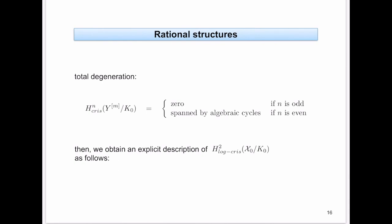Now, total degeneration. For the purposes of this talk, it is sufficient to assume that the odd crystalline cohomology of these Y^{[m]}'s is zero and the even crystalline cohomology groups are spanned by algebraic cycles. Think of projective space or rationally connected varieties as examples. This is what we will be needing — no more than this.